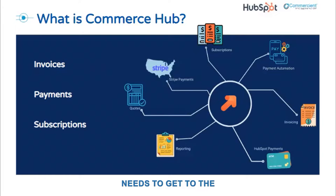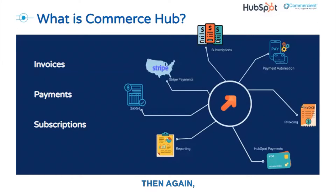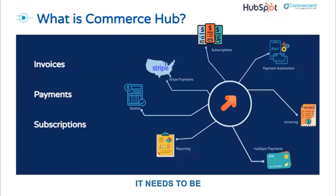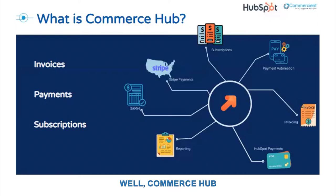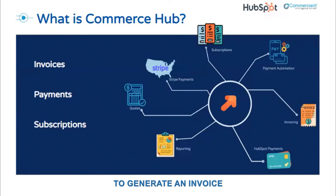The deal information needs to get to the accounting team. It may sit on a desk or in an inbox for a while. Then, without an integration, it needs to be checked for accuracy, and then finally an invoice can be created. Commerce Hub allows you to take the data from the existing deal in HubSpot to generate an invoice directly in HubSpot, adding stunning efficiencies to the process.